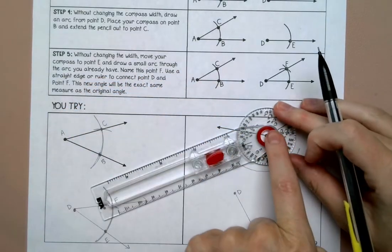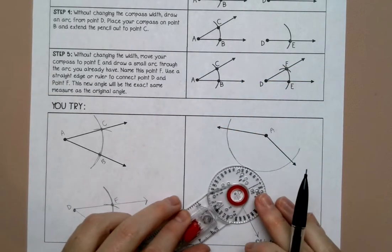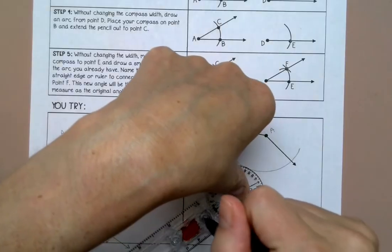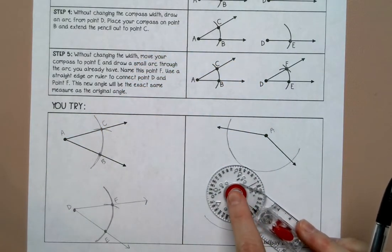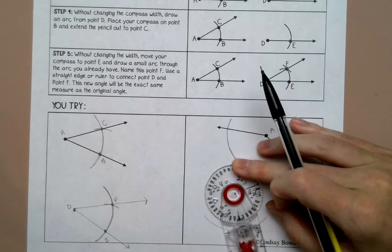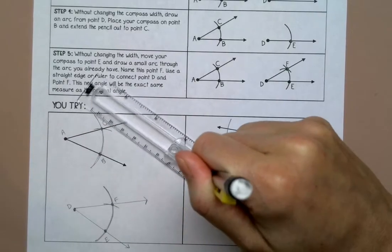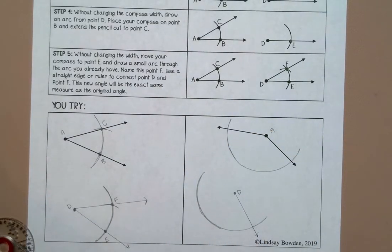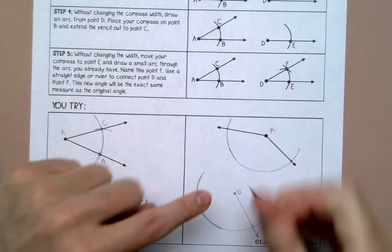If you need to pick up your compass or your finger you can, just make sure you line it back up on D. All right, then I'm going to measure the width of this angle because I want this angle to have the same width.